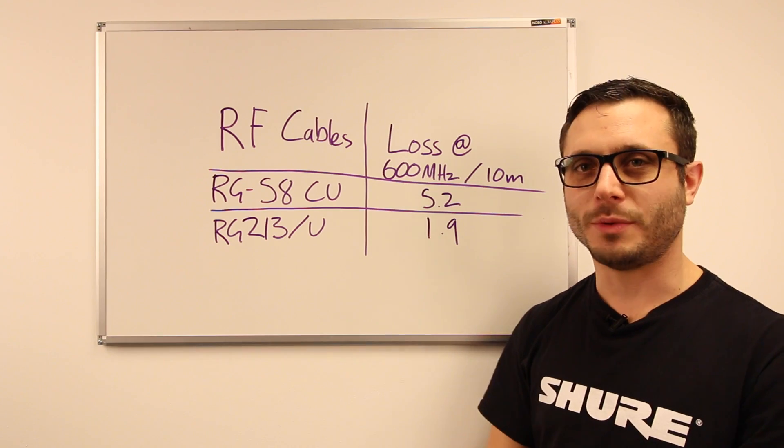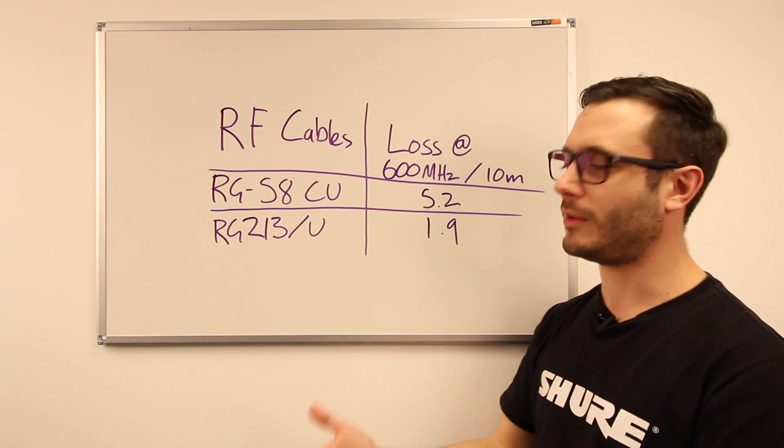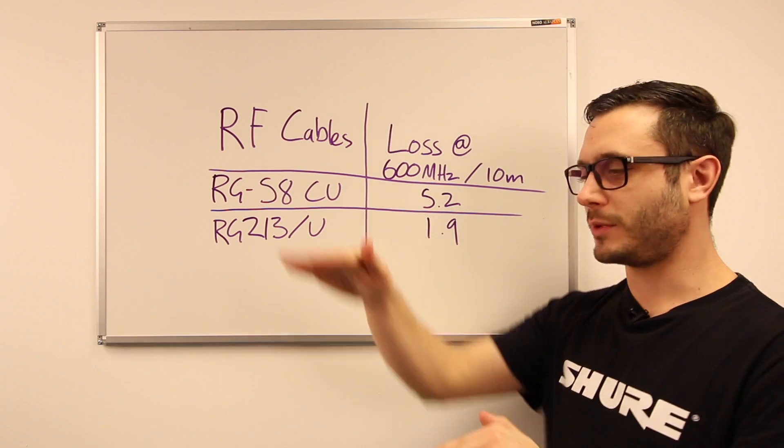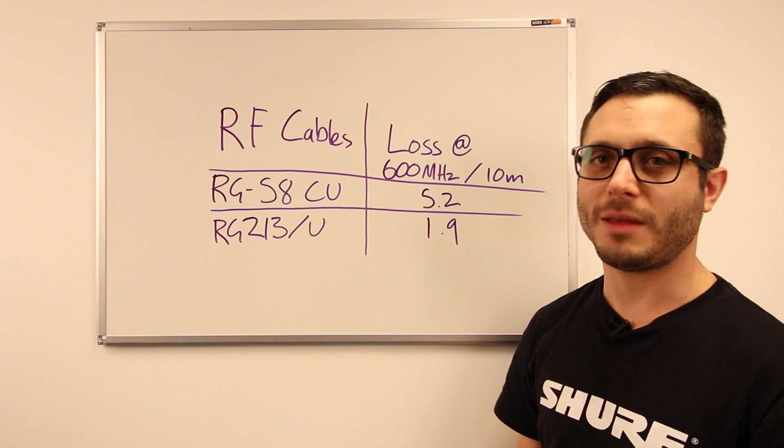If we then compare that to the RG213, we've only got 1.9 dB of loss. Still a bit of loss, but not too bad. So our 10 milliwatts would go down to approximately 7 or so. So significantly better than it was before.